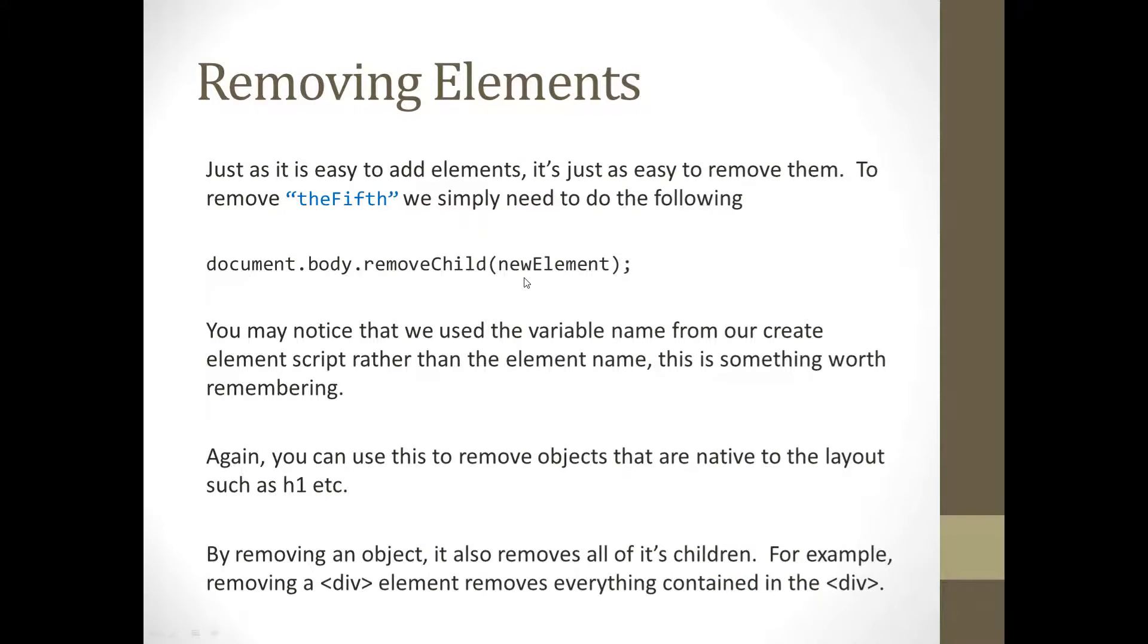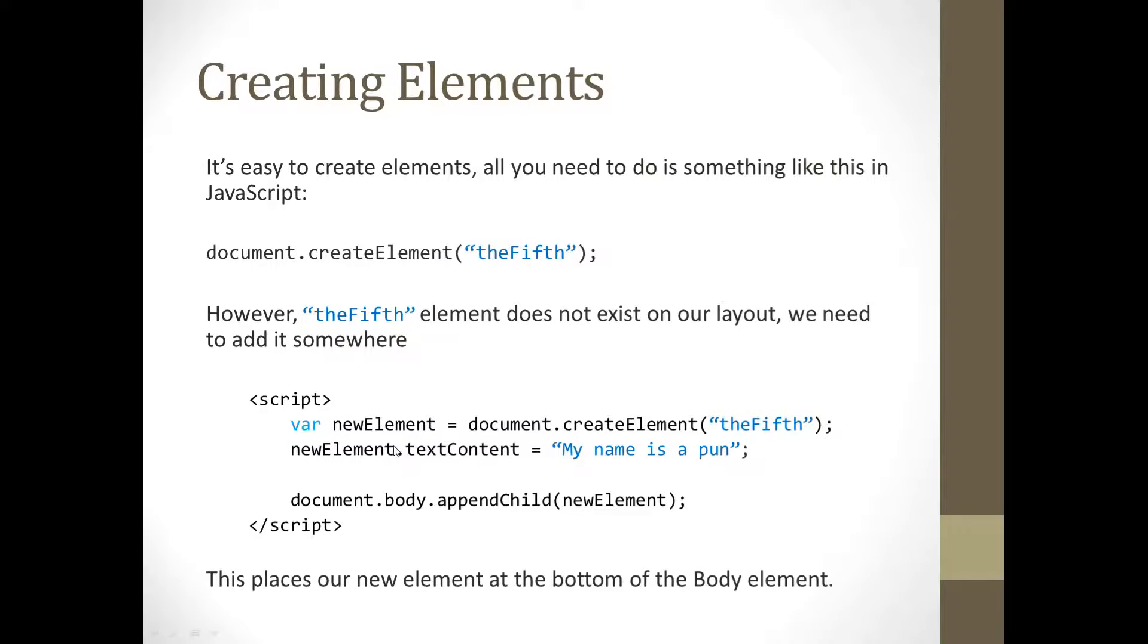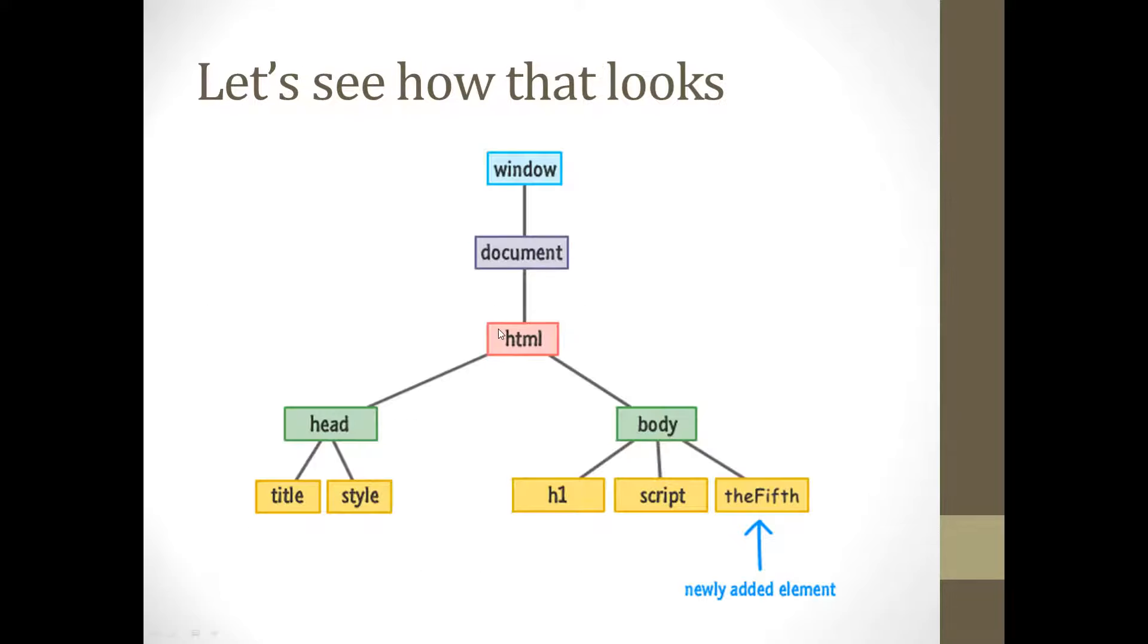And we can remove elements just the same way, document, using document body, removeChild, and then, in this case, new element. You may notice that we use the variable name from our createElement script rather than the new element name. So, we didn't actually write down the fifth. We wrote new element, which is interesting. We used that, because that's what's used in the appendChild, and in the creation of adding it to the layout type thing. So, there's the variable rather than that. So, that's something worth knowing.